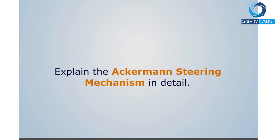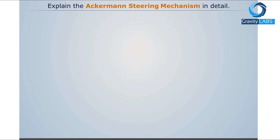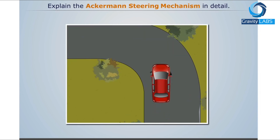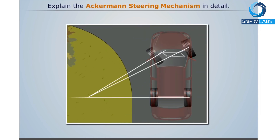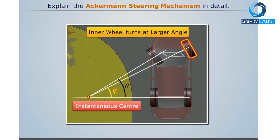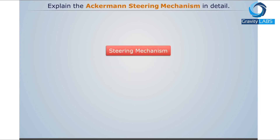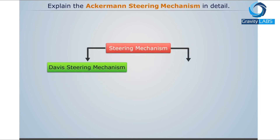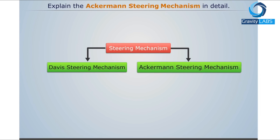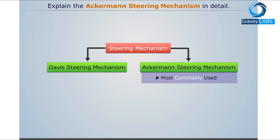We will discuss the steering mechanism in detail. For perfect steering, an instantaneous center is required about which all the wheels must rotate. Also, for this purpose the inner wheel has to turn at an angle more than the outer wheel. This condition is achieved with the help of two mechanisms: Davis steering mechanism and Ackerman steering mechanism. Out of these, Ackerman steering is universally used because of its simplicity.